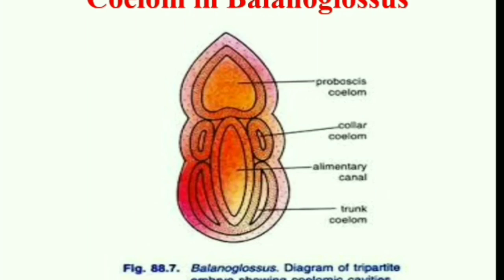Proboscis is also called protocome, collar is called mesosome, and trunk is called metasome. The body cavity or coelom is divided into three parts — proboscis coelom, collar coelom, and trunk coelom — making it a tricoelomate animal. Just like Echinodermata, Balanoglossus also has enterocoely, meaning the coelom arises from the alimentary canal in the form of pouches.